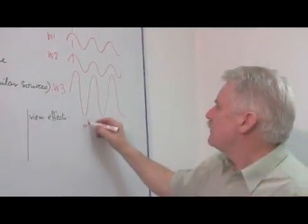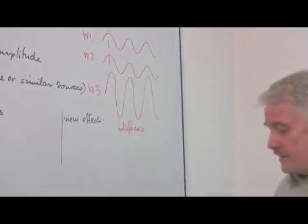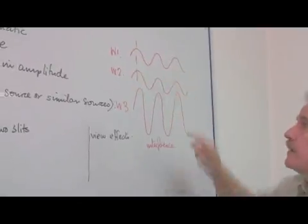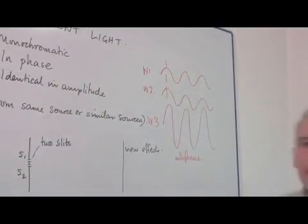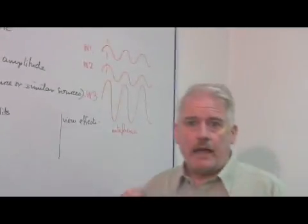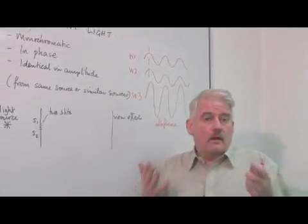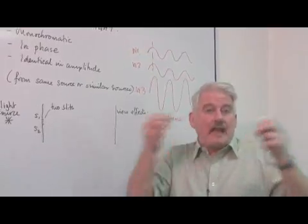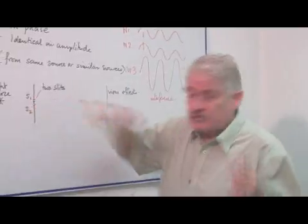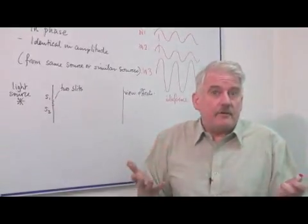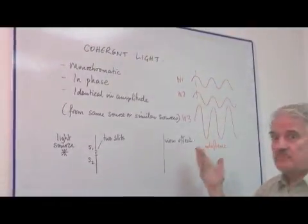This is called interference. Now, to get interference, I have to have two waves. And one of the problems is that the waves come from individual atoms producing an effect, and each atom in each source, if we've got two sources, is going to be different. And therefore, to get two actually like this is almost impossible.